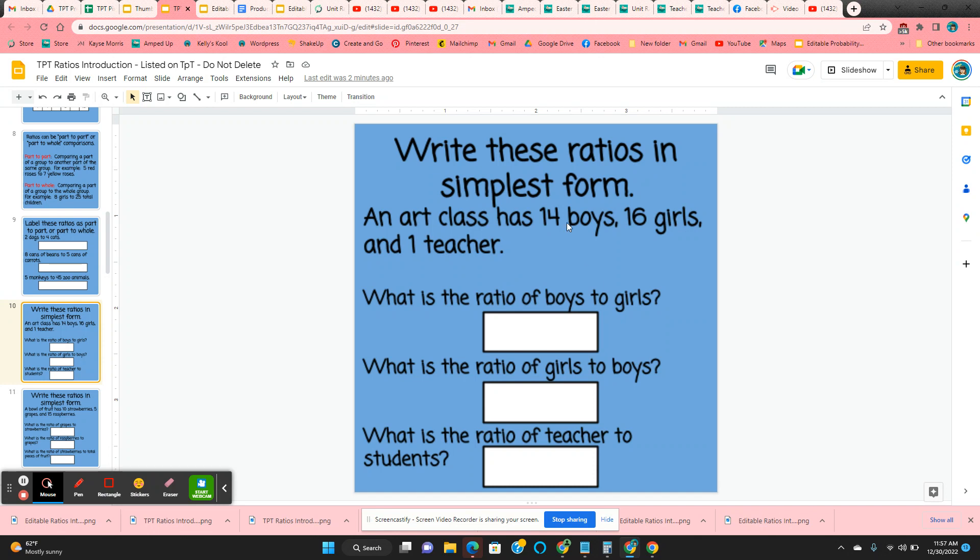On slide 10, they have to write these ratios in simplest form. So boys to girls will be 14 to 16, but they need to simplify that so it would be 7 to 8.